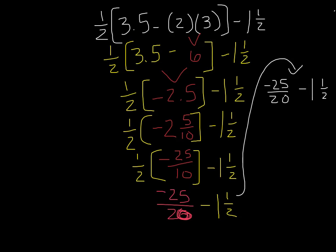What I'd like to do now is change my 1 and 1/2 to an improper fraction so that I'll be able to try to find a common denominator so that I can subtract both my negative 25/20 with my 1 and 1/2. So 1 and 1/2 is the same as 3/2.